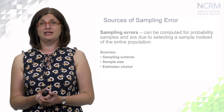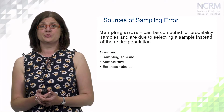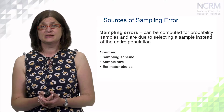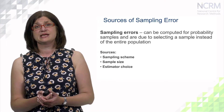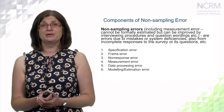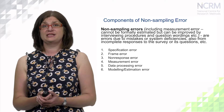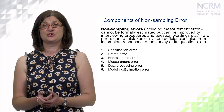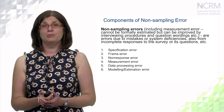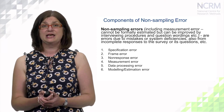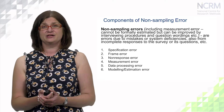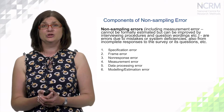Sources of sampling errors can come from sampling schemes – for example, problems with stratification, clustering or selection probabilities – as well as from sample size, effective sample size, or estimated choices. Non-sampling errors include measurement errors, which on many occasions cannot be formally estimated but can be improved by interviewing procedures and question wordings. In many cases, non-sampling errors can be much more damaging than sampling errors because we can usually control for sampling errors, whereas non-sampling errors such as measurement errors often cannot be formally estimated.